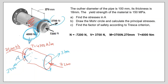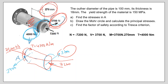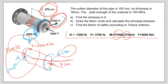The applied force also creates a bending moment. This bending moment is calculated by multiplying the force by the moment arm: 3700 N times 270 mm. At the end, we have all the internal loadings in our cut section.